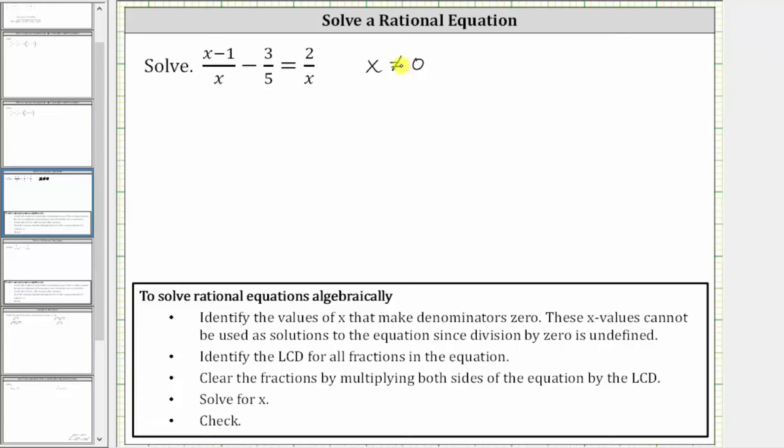The next step is to identify the least common denominator, because we will multiply both sides of the equation by the least common denominator to clear the fractions from the equation. Looking at the denominators, notice how the least common denominator is going to be 5x.